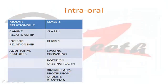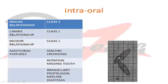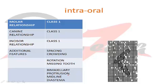Intraorally, the molar relationship will be Class 1, the canine relationship will be Class 1 as described, and the incisor classification will be Class 1. The incisor classification was given by Ballard and Wayman and was adopted by the British Society, also known as the British Standard classification. In this classification, based on the incisor relationship, the incisal edge of the lower mandibular incisor occludes or lies below the cingulum but posterior to the upper incisor. Additional features can be spacing, crowding, rotations, missing teeth, bimaxillary protrusion, or midline diastema.